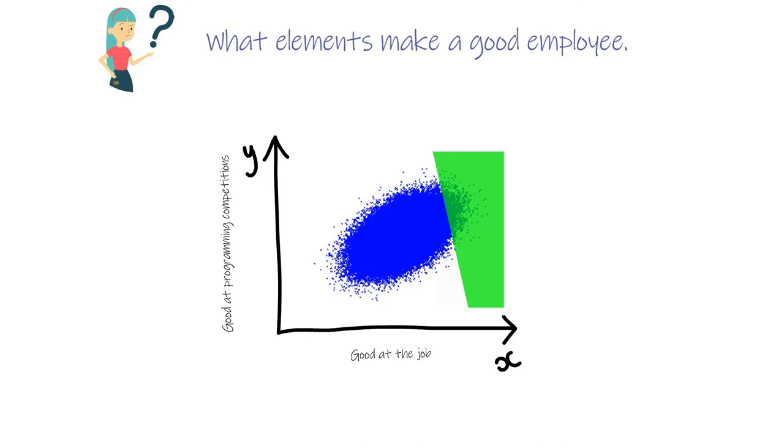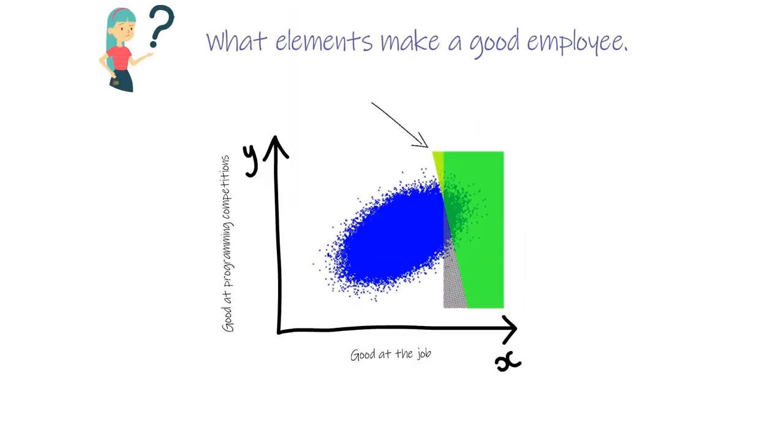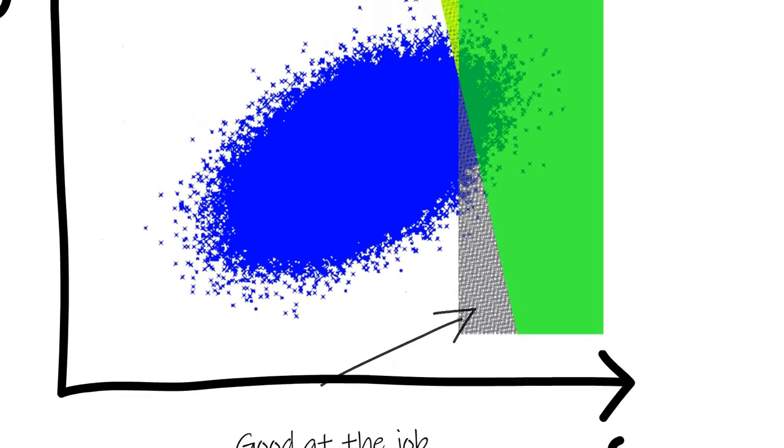See, we now get a negative correlation. There are some people who are good at competitions and not so good at work being selected. Meanwhile, some people who are good at work but not that good at competitions didn't get the job offer.